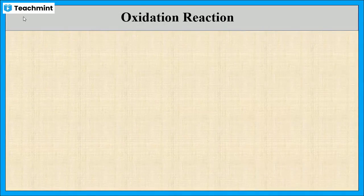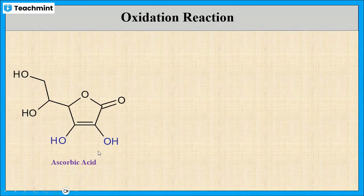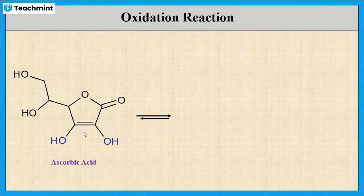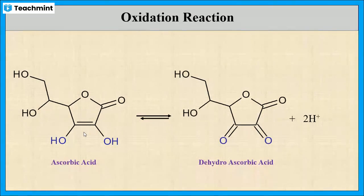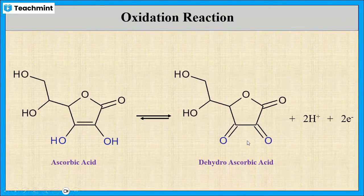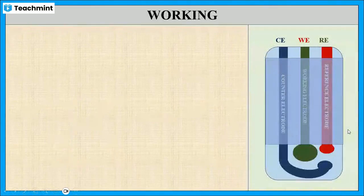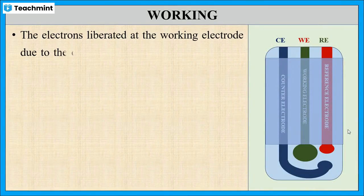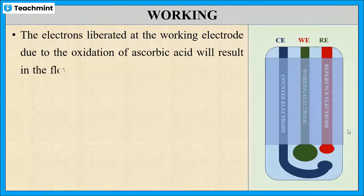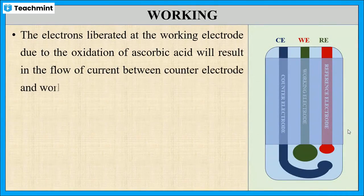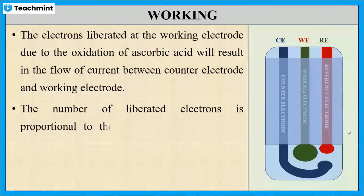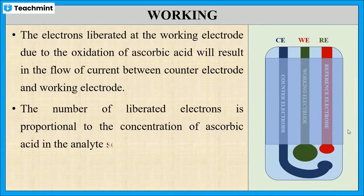Let us see the oxidation reaction of ascorbic acid. Ascorbic acid, on oxidation, gives dehydroascorbic acid along with the liberation of electrons. The liberated electrons result in the flow of current between the counter electrode and the working electrode, and the number of electrons liberated is directly proportional to the concentration of ascorbic acid.